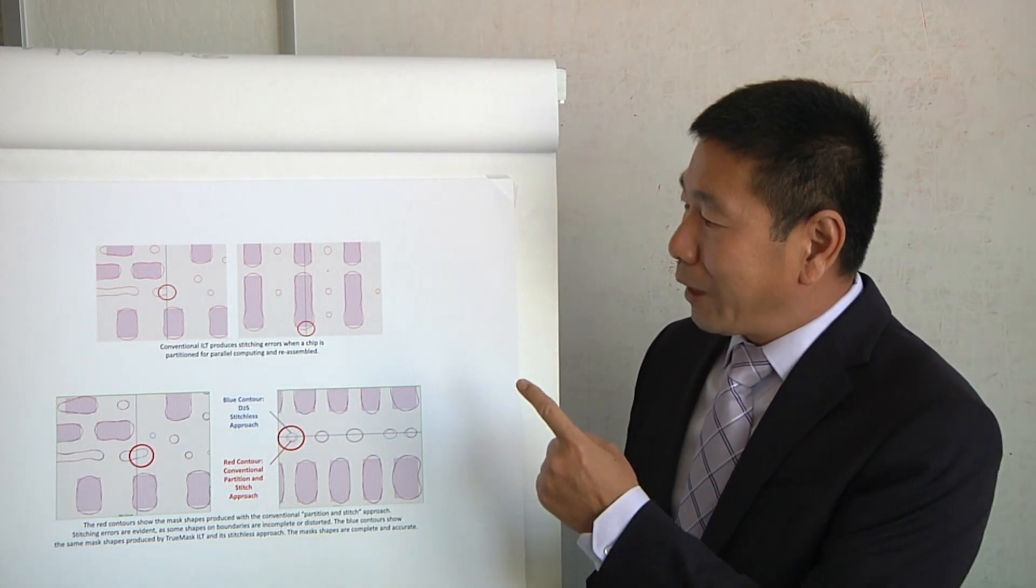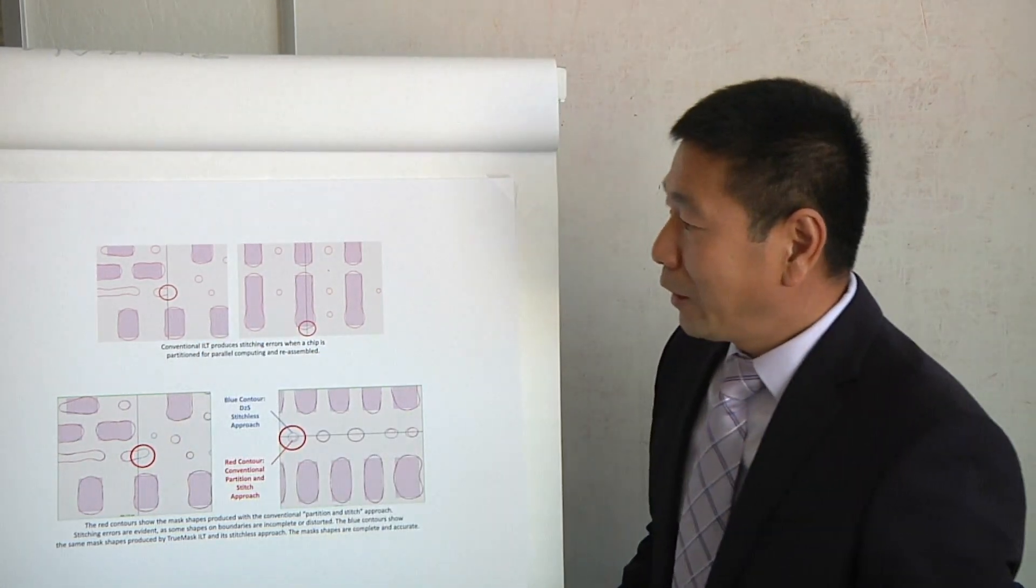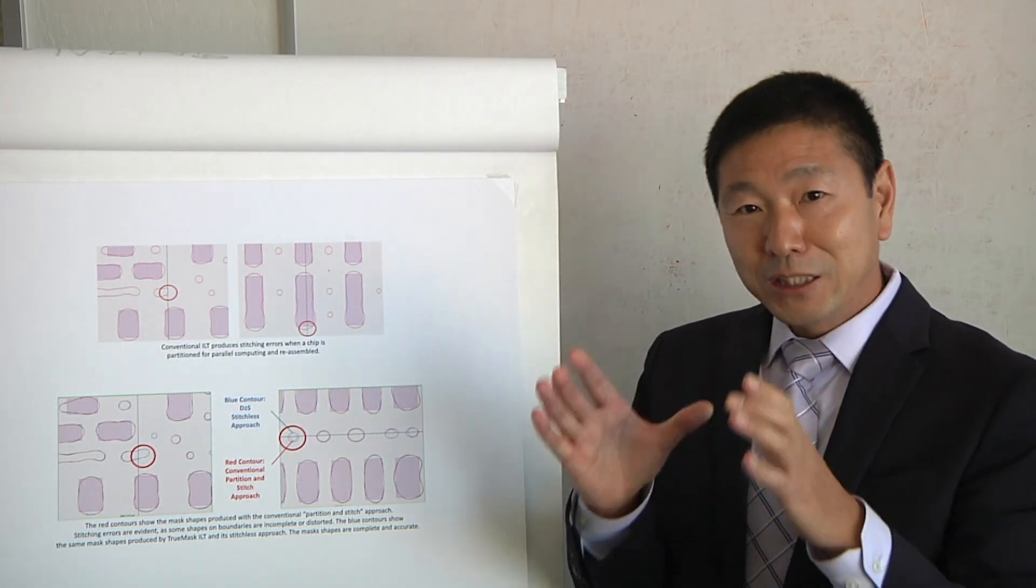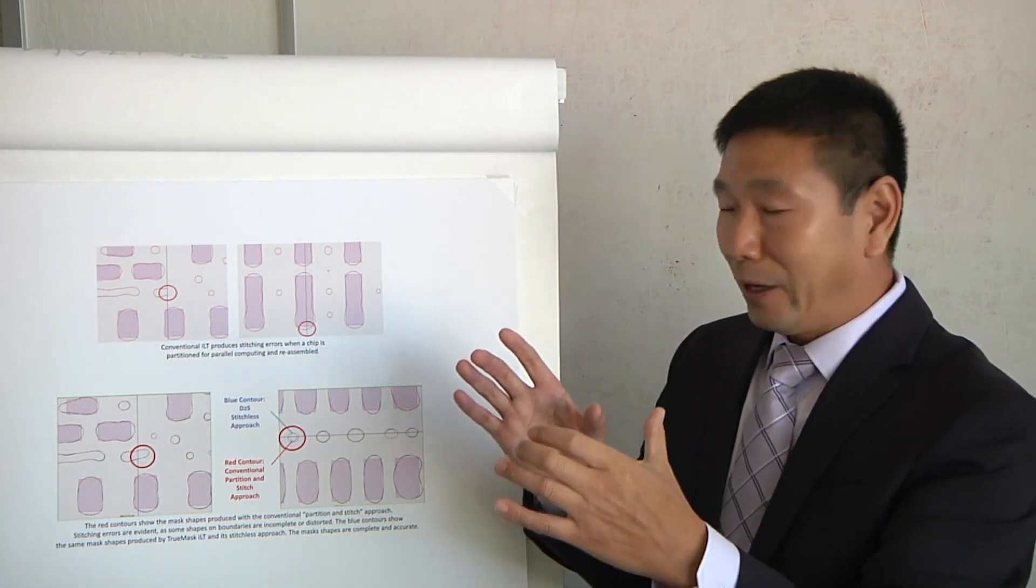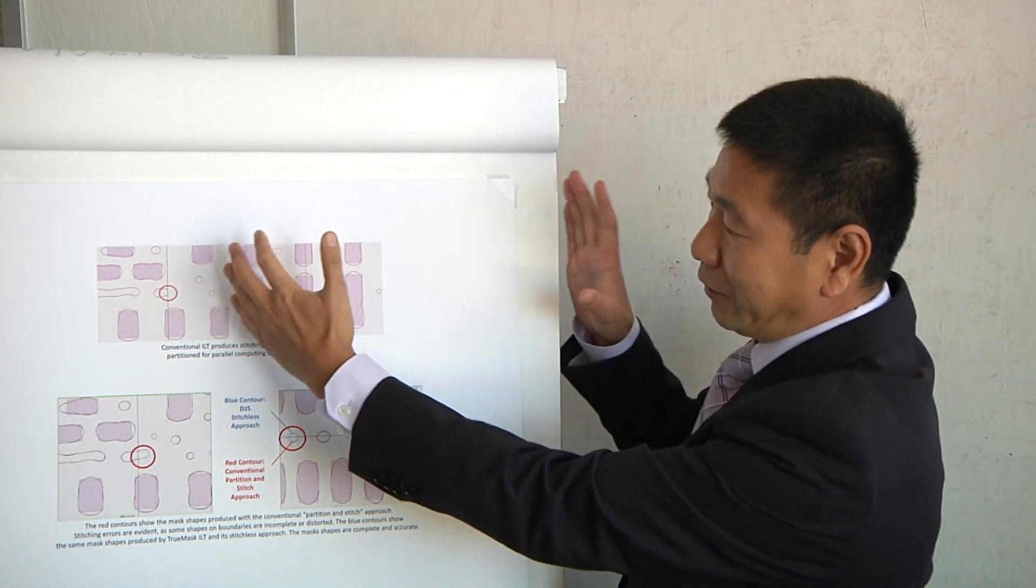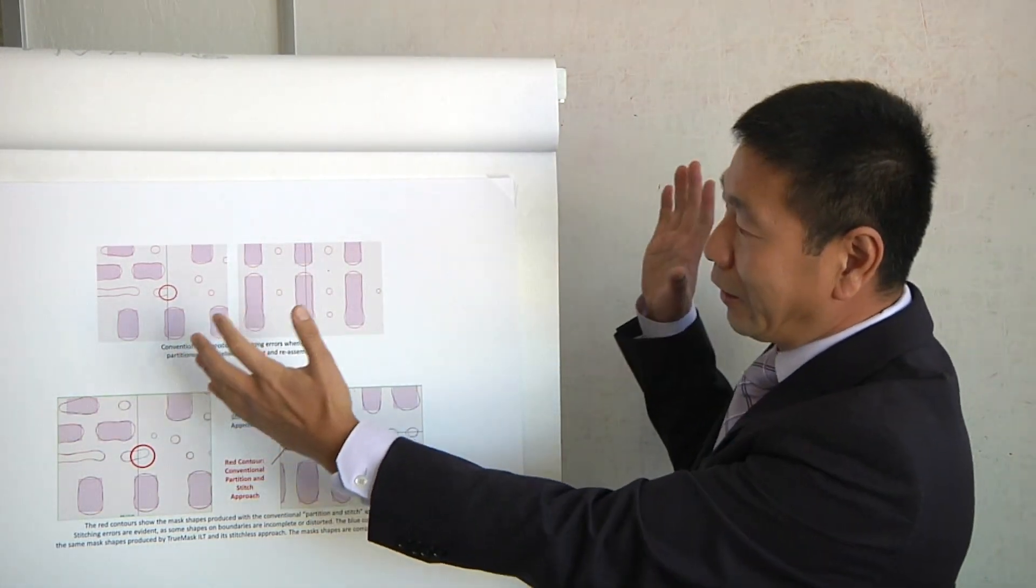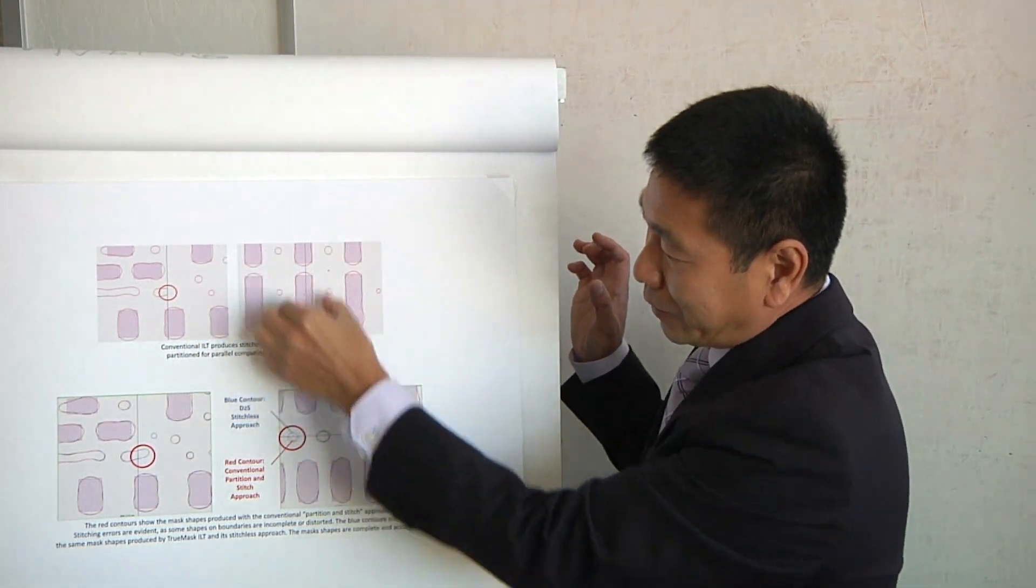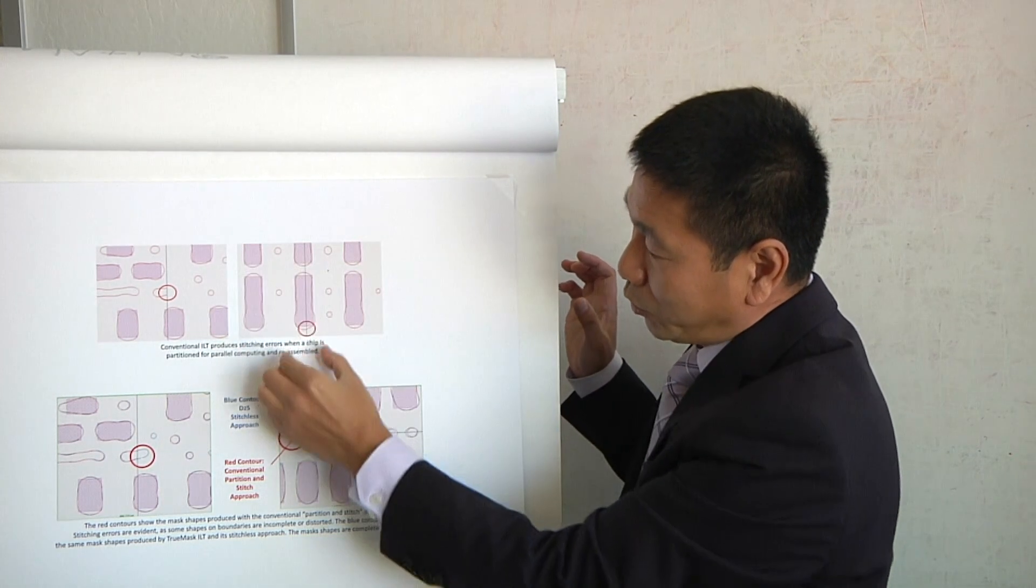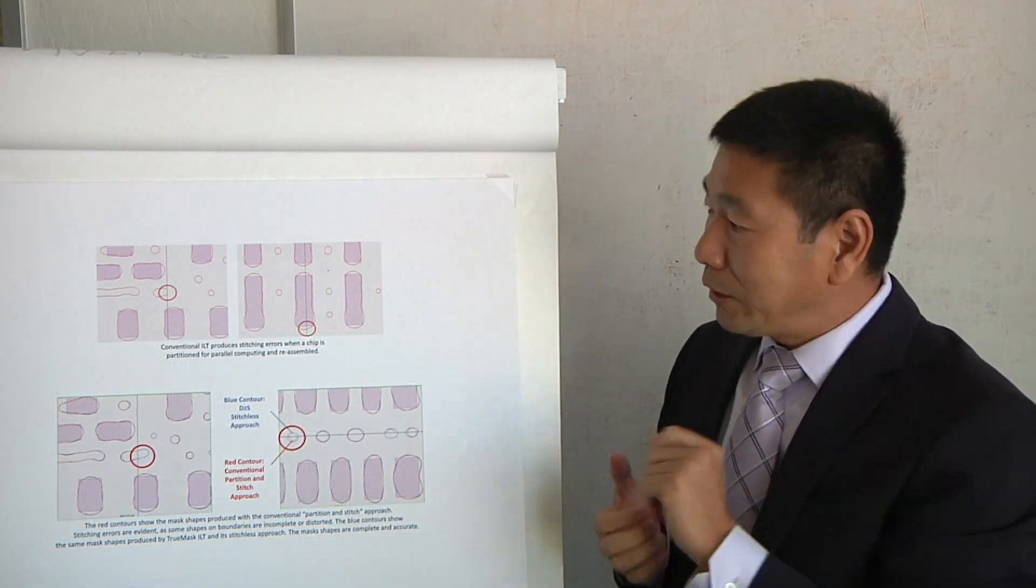But we didn't stop there. We actually came up with a very innovative idea to solve this stitching issue. So basically, as you can imagine, you have a one GPU, it can handle certain area. Actually, GPU has much bigger memory. Therefore, the partition compared to what CPU can handle is actually much bigger. Therefore, the boundary area that if you have to do the stitching, redo the stitching, is actually relatively small.